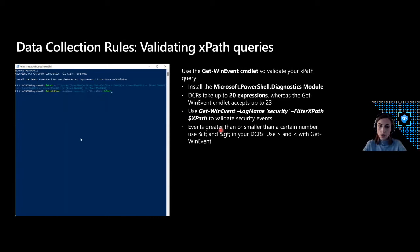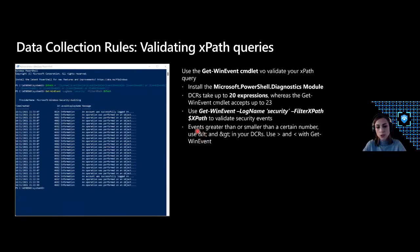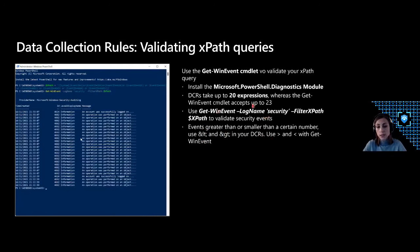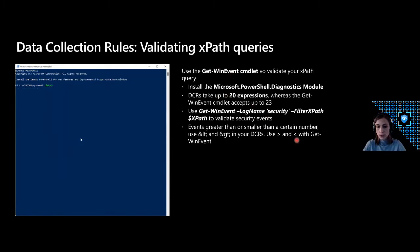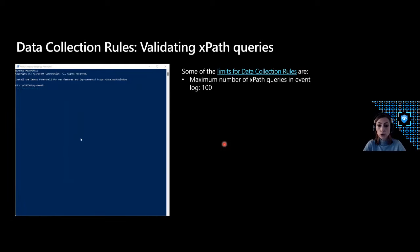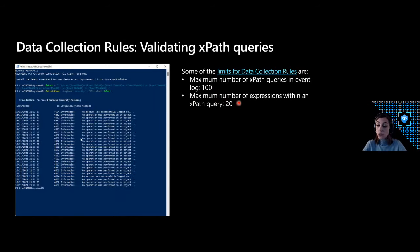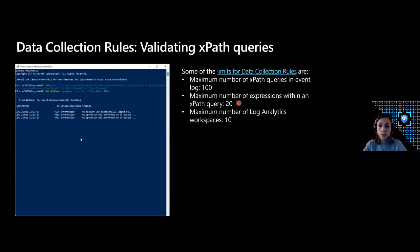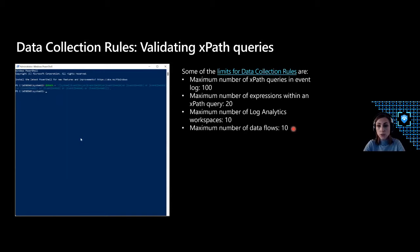There are limits for data collection rules: the maximum number of XPath queries you can include per event log in a DCR is 100, and each query can contain up to 20 expressions — so you can include a large number of events in one DCR. If that isn't enough, you can create multiple data collection rules. The maximum number of Log Analytics workspaces per DCR is 10, and the maximum number of data flows is also 10.